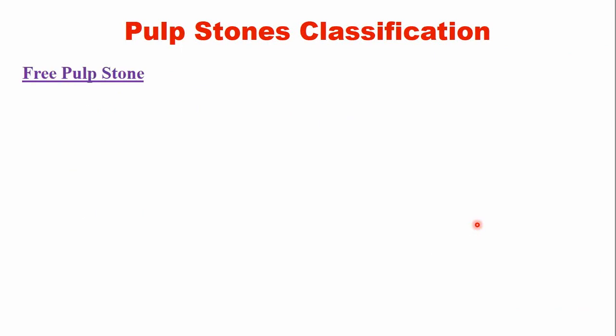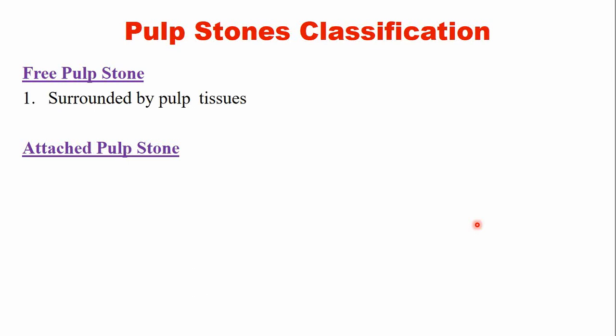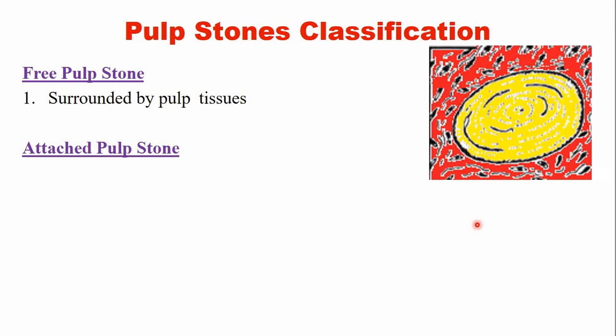Another way of classifying pulp stones is free pulp stones and attached pulp stones. Free pulp stones are those that are surrounded by the pulp tissue. This is a picture of a pulp stone where the pulp stone is surrounded by the dental pulp — it has no connection with the dentine or dentinal walls.